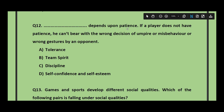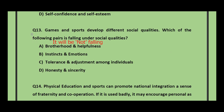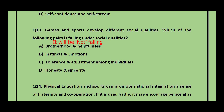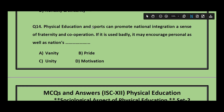Question number 12: __ depends upon patience. If a player does not have patience, he cannot bear the wrong decision of an umpire or misbehavior by an opponent — tolerance, team spirit, discipline, or self-confidence and self-esteem? The answer is tolerance. Question number 13: Games and sports develop different social qualities. Which of the following pairs falls under social qualities — brotherhood and helpfulness, instinct and emotions, tolerance and adjustment among individuals, or honesty and sincerity? The answer is instinct and emotions.